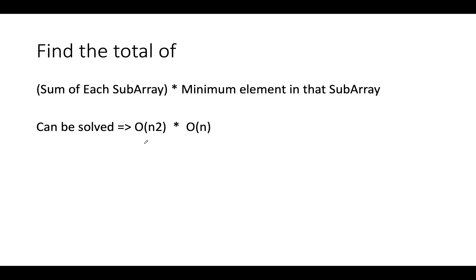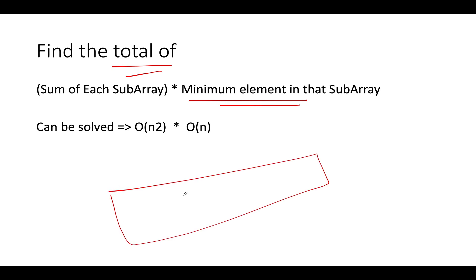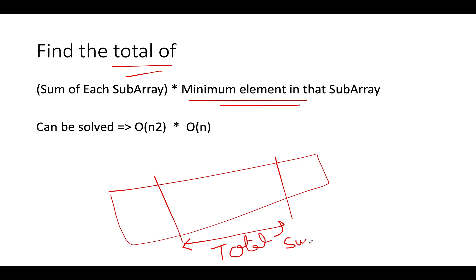Now let's get back to understanding the question in mathematical format. The question is asking us to find the total of all subarrays that exist in our input array. For each subarray, we need to identify its sum and multiply it with the minimum element in that subarray. We need to do it for each and every possible subarray. This is what the question is asking us to do.